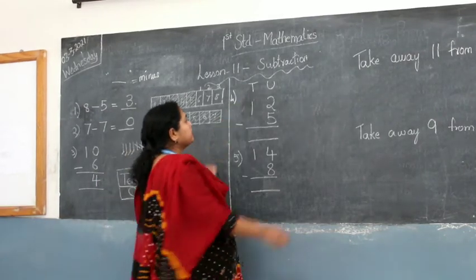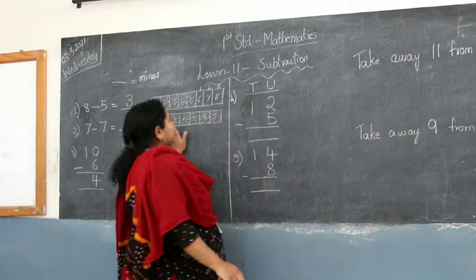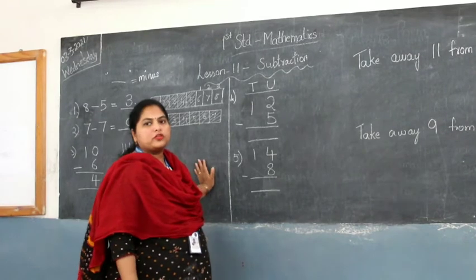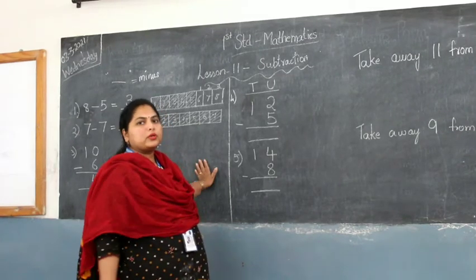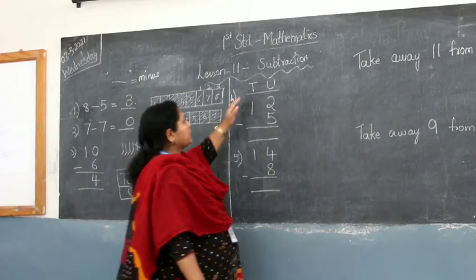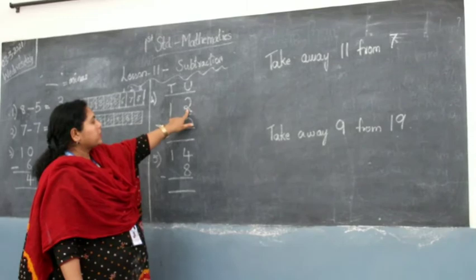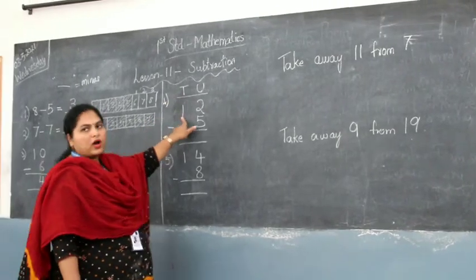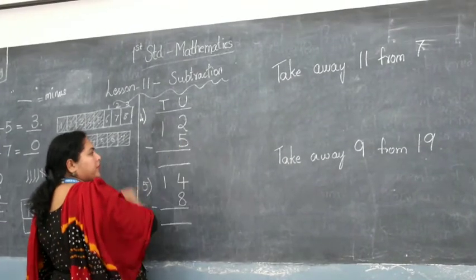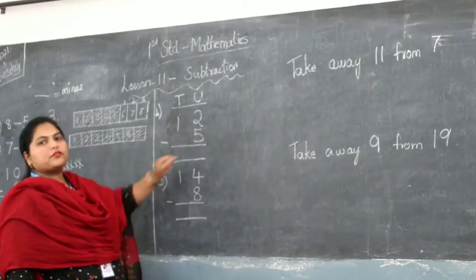I will go through 10 on the board — please copy it in your notebook. This will help you all to understand the subtraction well. So write down 10s and units. Under the units write 2, under the 10s write 1, which makes 12. And under the units column it is 5. So it is 12 minus 5.